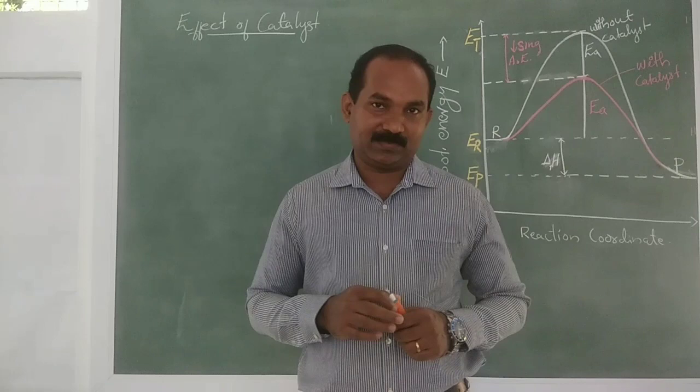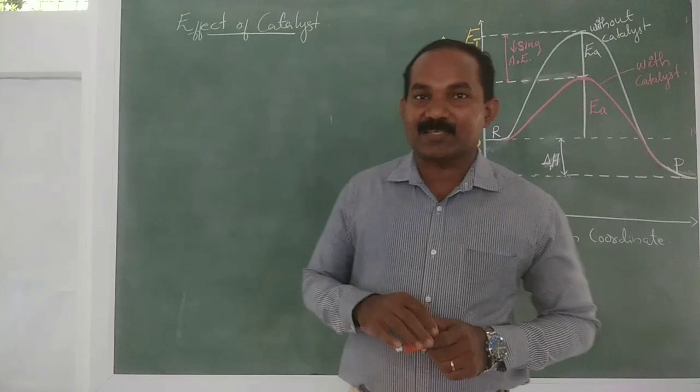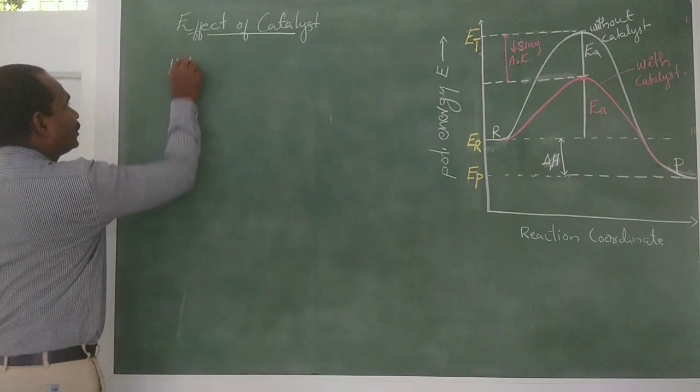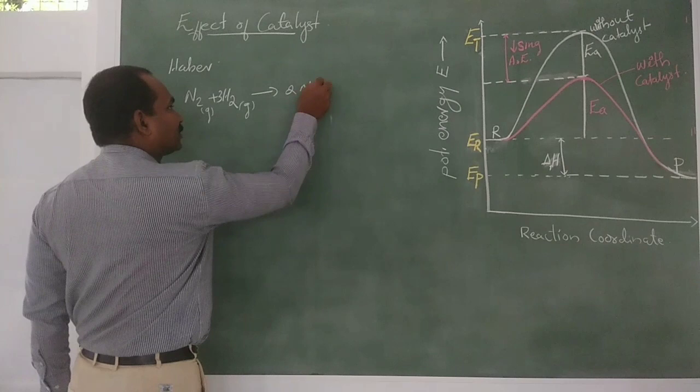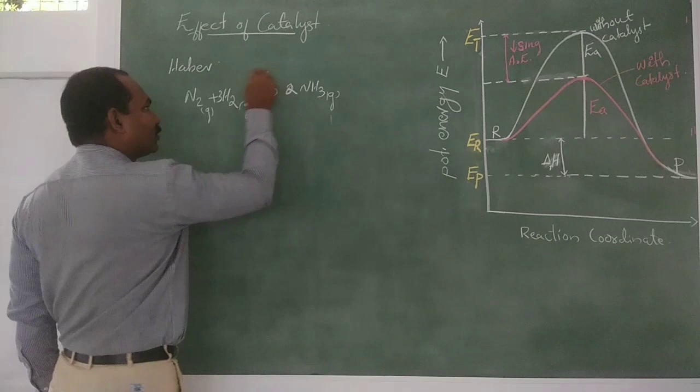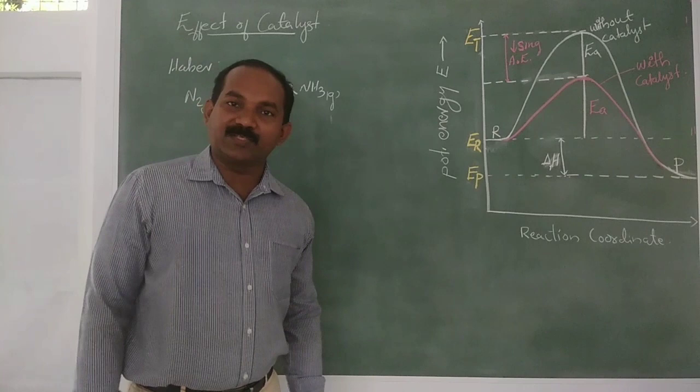Let's consider some reactions. In the Haber process, N2 gas plus H2 gas gives 2NH3 gas. In the Haber process, iron is used as a catalyst.